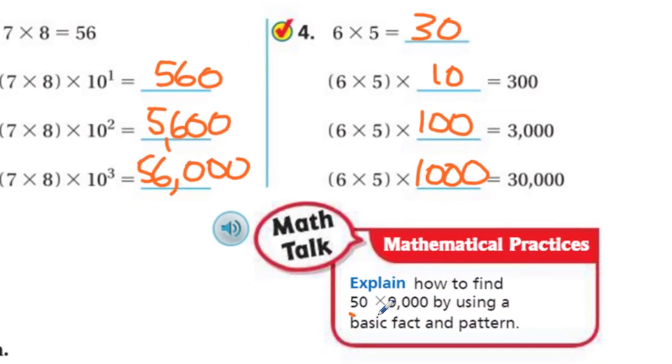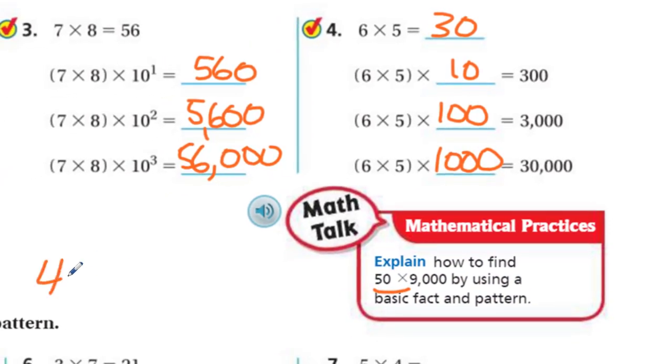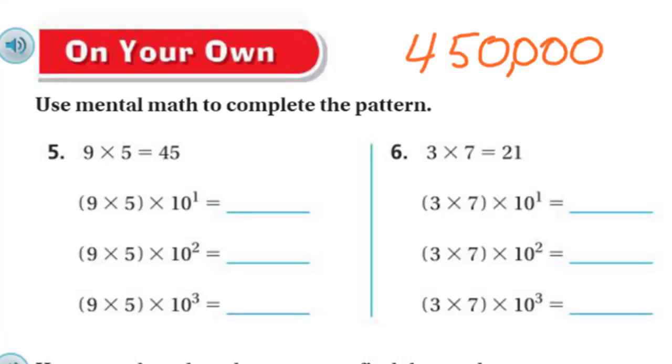Explain how to find 50 times 9,000 by using a basic fact and pattern. We've been doing these problems, so it's pretty easy. You just want to take your 45, and then we have, in this case, 1, 2, 3, 4 powers. 1, 2, 3, 4. 450,000.